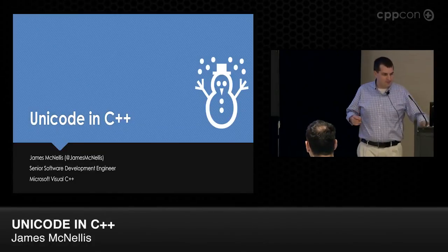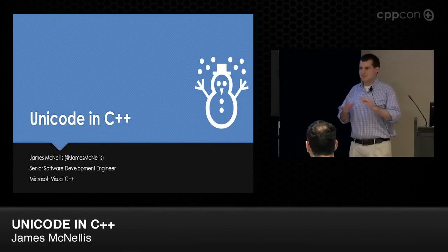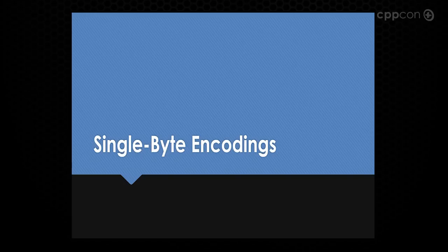One caveat before we start: anytime I say 'byte,' we're talking about an 8-bit byte. So if there are people who work in embedded systems, we're assuming an 8-bit byte for this presentation to keep things simple. Before we start talking about Unicode, clearly Unicode is not that old, and we have been encoding text on computers for quite some time. So what did we do before there was Unicode? We can start by looking at what we'll call single-byte encodings.